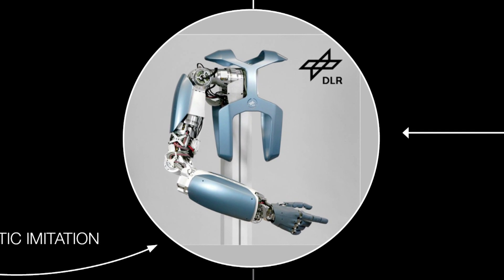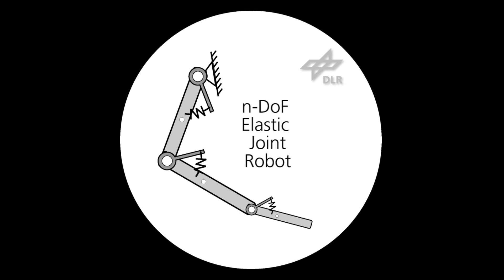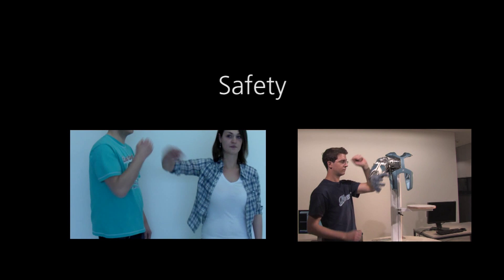At DLR, a new variable stiffness hand-arm system was developed. It is equipped with two actuators per joint, allowing simultaneous control of position and stiffness. This system is able to safely interact with humans.